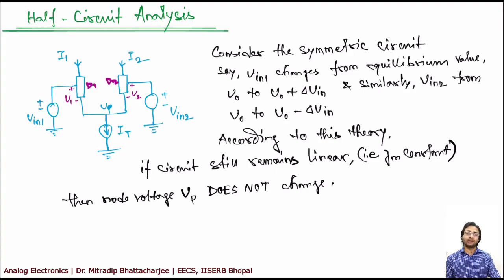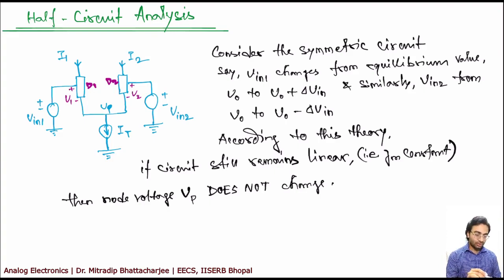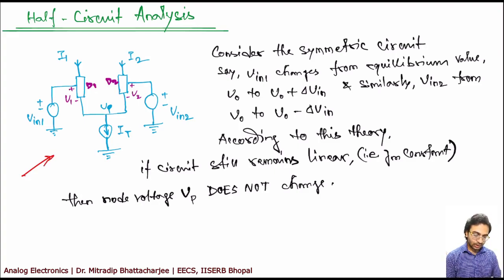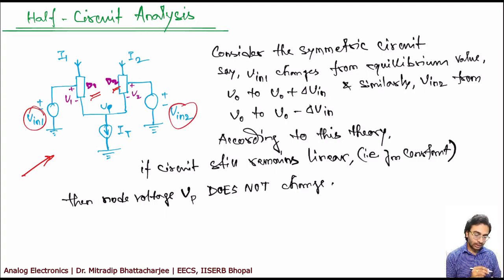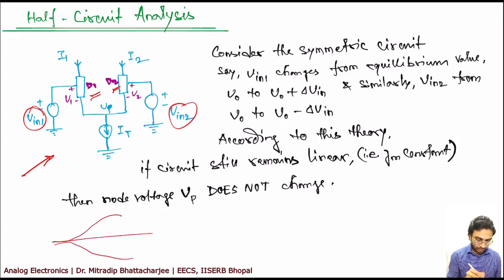This is applicable for symmetric circuits. Your differential amplifier is symmetric if you consider the y-axis — it's symmetric. This is the simple concept of half-circuit analysis. Now if you have a symmetric circuit, say D1 and D2, two devices with inputs Vin1 and Vin2 — say your Vin1 and Vin2 change from equilibrium.